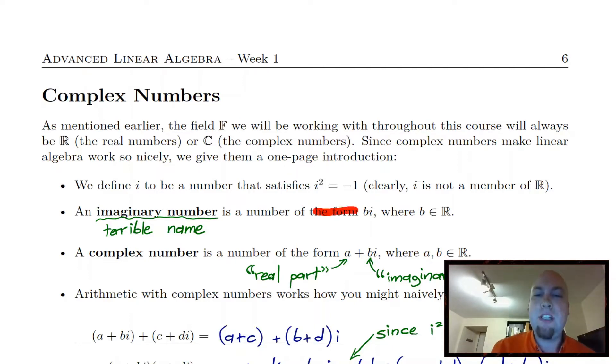So we're going to append this extra number that we call i here and i has the property that i squared equals minus one. Certainly there's no real number with that property. So it really gives us something new.